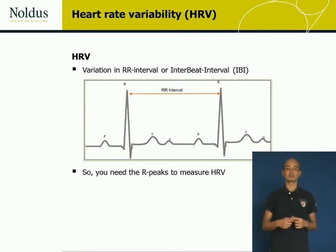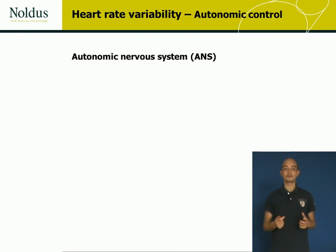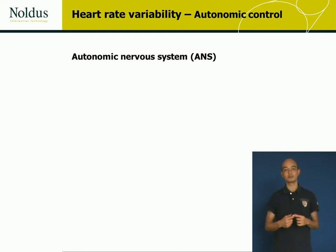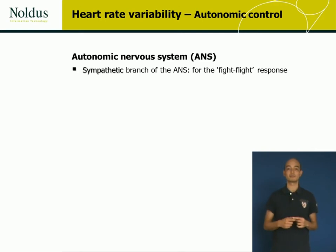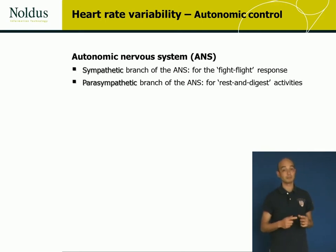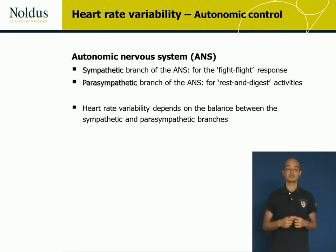In resting conditions, heart rate is variable, so heart rate variability is high. As you might have heard in the presentation about heart rate, heart rate is controlled by the balance between the sympathetic and parasympathetic branch of the autonomic nervous system. And depending on this balance, heart rate variability increases or decreases.